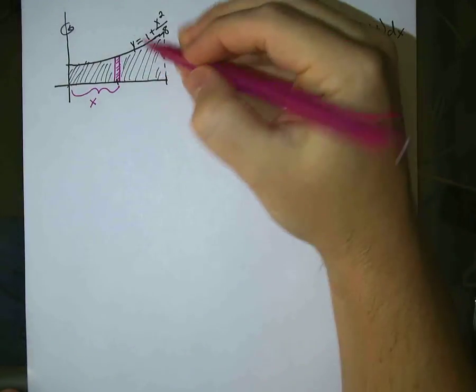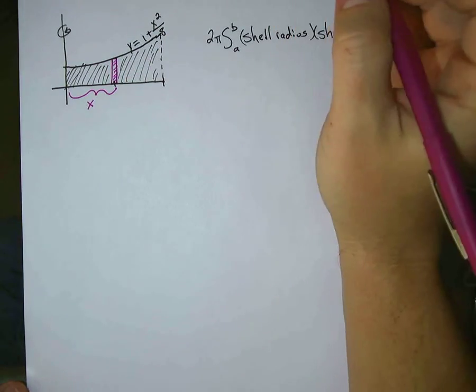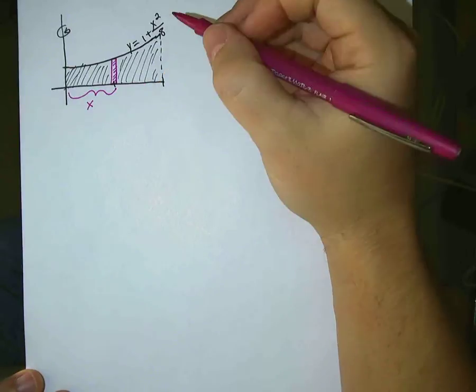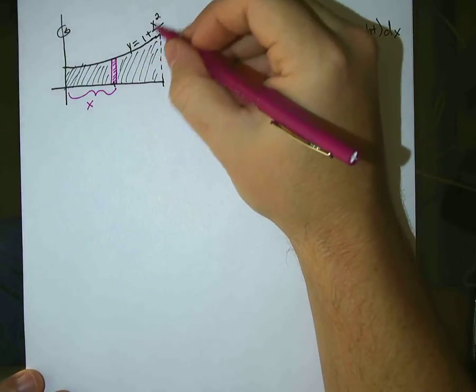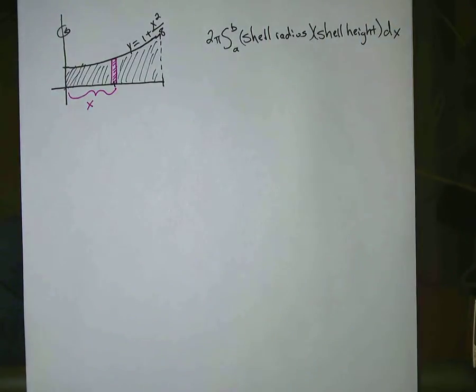The shell height is this one, going up and down, and it's going to be determined by the difference between the function and, it looks like, the x-axis. Okay, so the shell height is going to basically just be this function, y equals 1 plus x squared over 8.